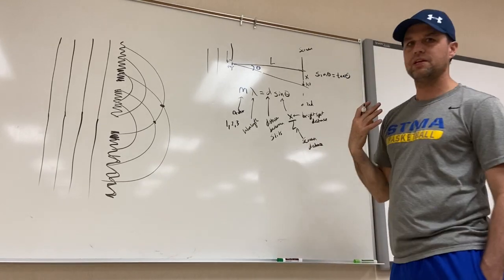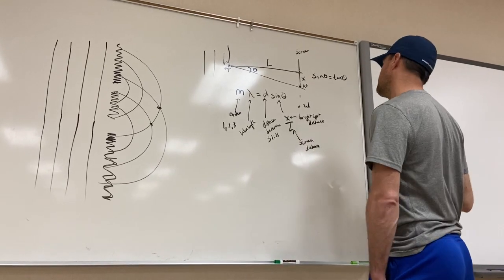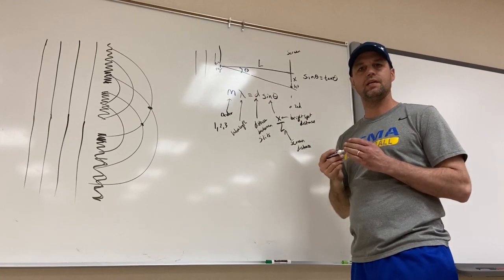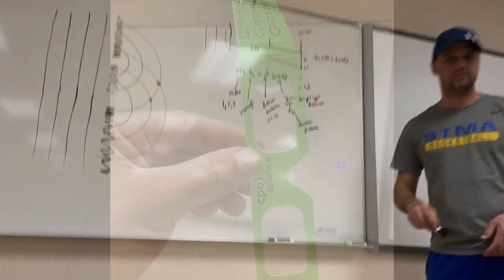And L is how far the screen is from the grating. So if you ever wondered, well, how do they know the purple laser is 400 nanometers? Well, they use M lambda equals DX over L, the diffraction grating equation.